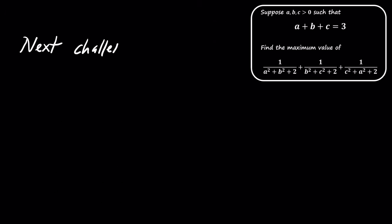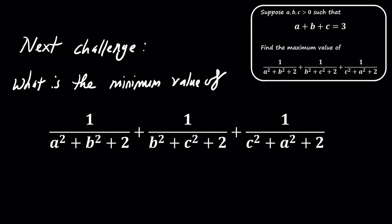Now that we have found the maximum value of J, it's time for a new challenge. Let's consider finding the minimum value of the same expression. This will require a different approach, but we can still use similar techniques. Here's the problem: Find the minimum value of J. Try it out, and we'll cover the solution in the next video.